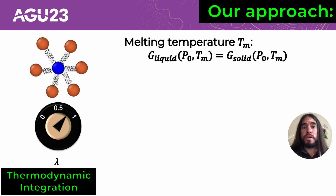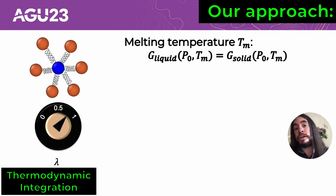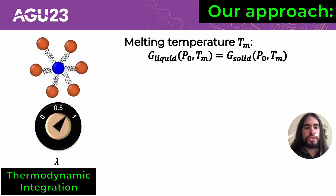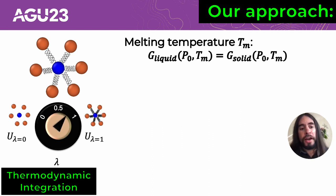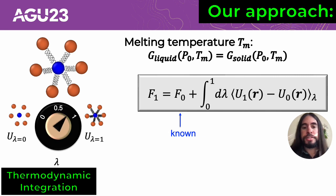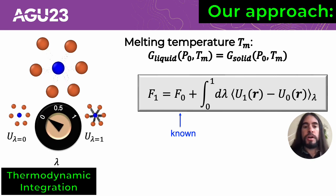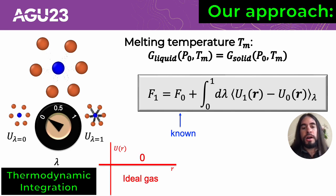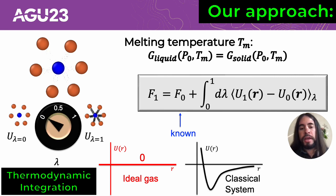The approach we took to get the melting curve of iron was to obtain its free energies. At different pressures and temperatures, we calculate the Gibbs free energies of solid and liquid iron, and when those free energies are equal, that defines a melting point. To obtain those Gibbs free energies, we use the thermodynamic integration technique, which connects two systems through a smoothly varying parameter lambda. If we know the free energy of the system we start with — for instance, an ideal gas with zero interactions and a given Helmholtz free energy — we can derive the free energies of a classical system, and then from there the free energies of our quantum system.